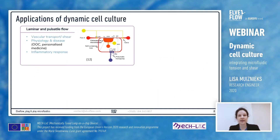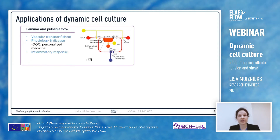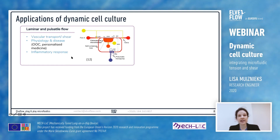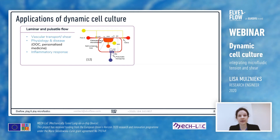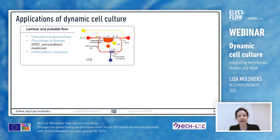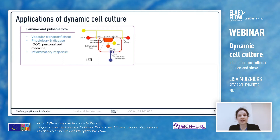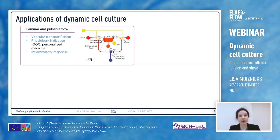Now I'll give some applications of dynamic cell culture in biology. The first and probably most important application of being able to apply flow — whether laminar or pulsatile — in your microfluidic cell culture system is the ability to mimic a blood vessel: mimicking the flow of fluid for nutrient exchange, removal of waste, and importantly the addition of shear stress to your system.